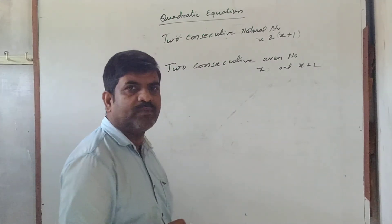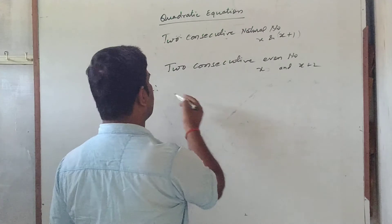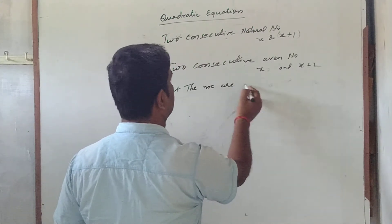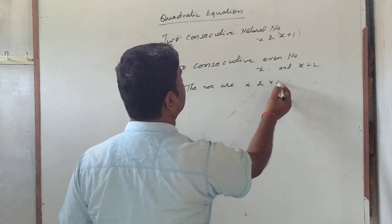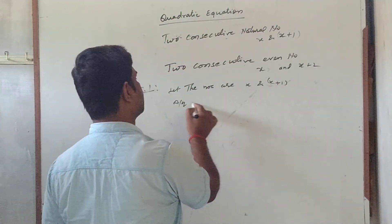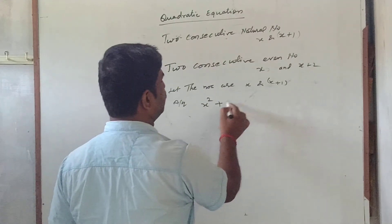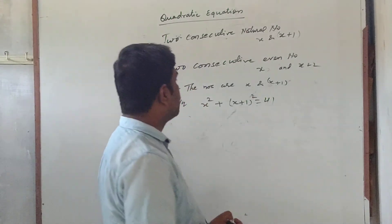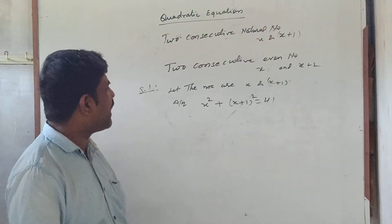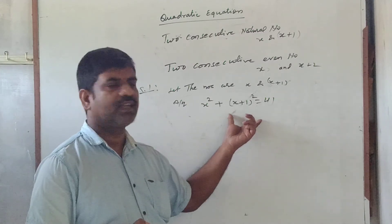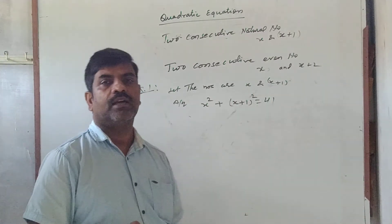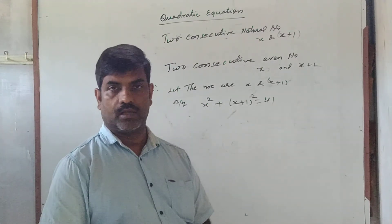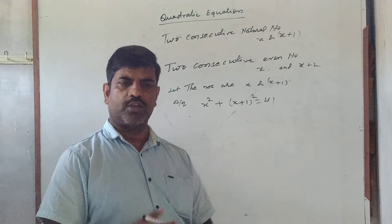Then you frame the equation from the problem. For example: find two consecutive natural numbers whose sum of squares is 41. Let the numbers be x and x+1. According to the question: x² + (x+1)² = 41. Now solve this by the quadratic process to get the value of x, and substitute back to find the required numbers.